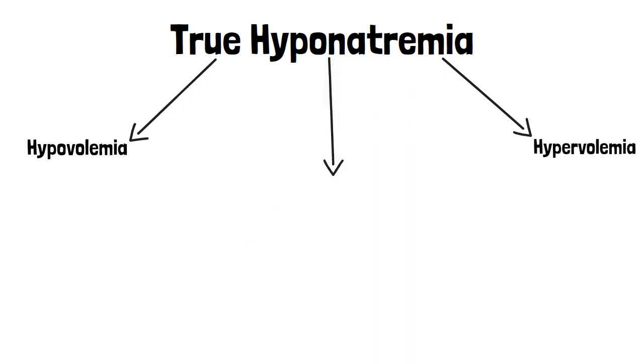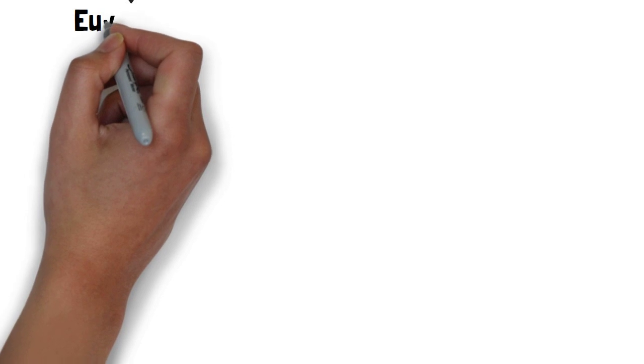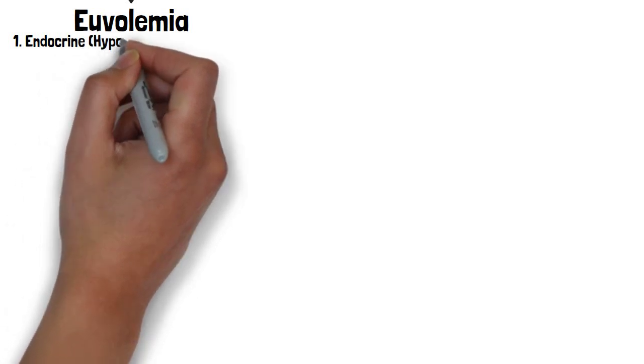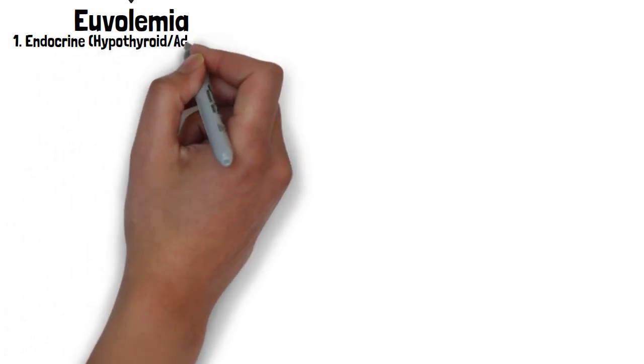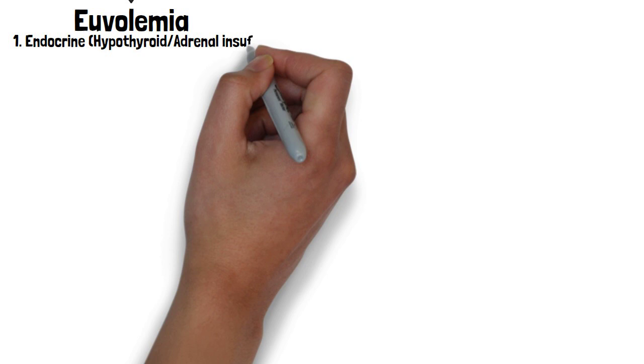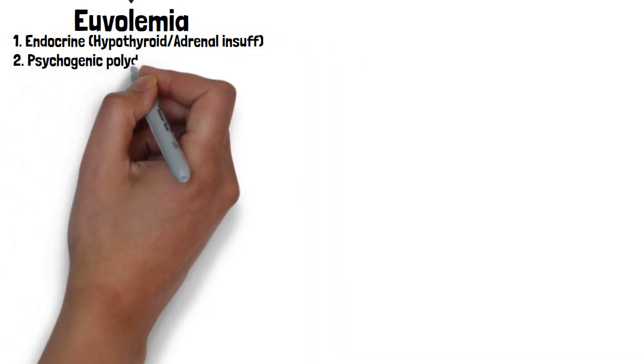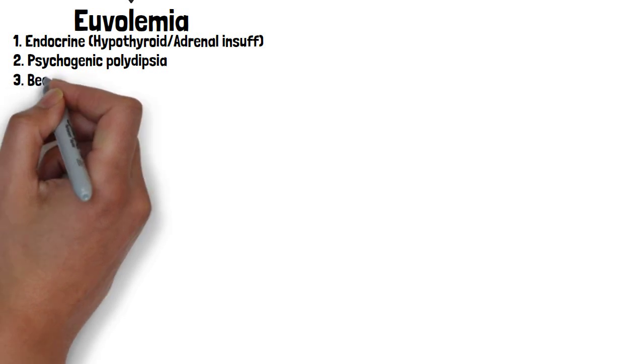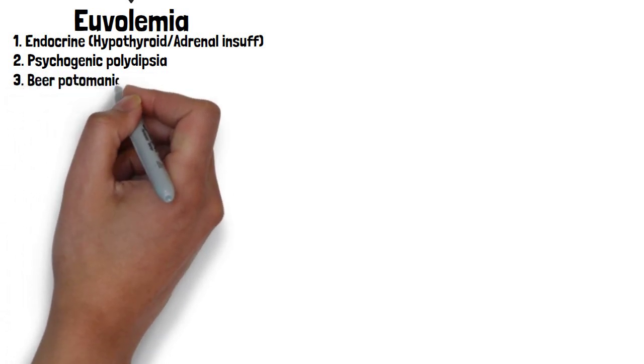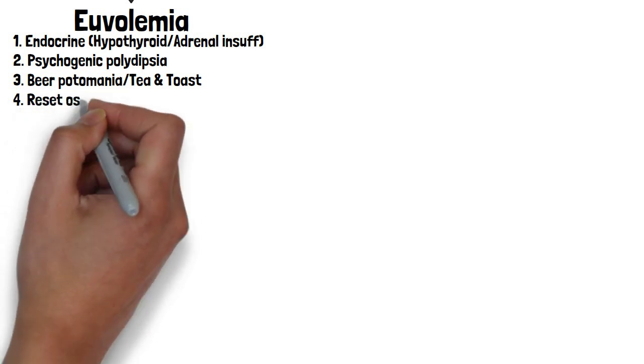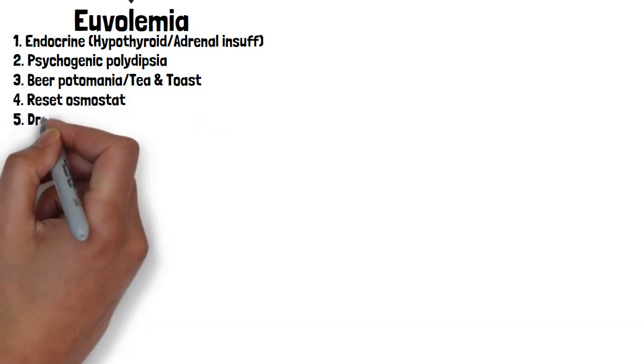When it comes to euvolemia, there's quite a few conditions that we can consider. One that's always on the list is endocrinopathies, typically in the form of hypothyroidism and adrenal insufficiency. The next one is psychogenic polydipsia, and something that's very closely related to this called beer potomania, and or the tea and toast diet. Next is an entity referred to as reset osmostat. Next are some drugs that can cause it, and lastly, SIADH.